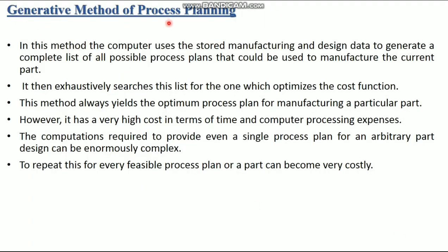The generative method of process planning: in this method, the computer uses stored manufacturing and design data to generate a complete list of all possible process plans that could be used to manufacture the current part. It then exhaustively searches this list for the one which optimizes the cost function. This method always yields the optimum process plan for manufacturing a particular part. However, it has a very high cost in terms of time and computer processing expenses. The computations required to provide even a single process plan for an arbitrary part design can be enormously complex, and repeating this for every feasible process plan for a part can become very costly.